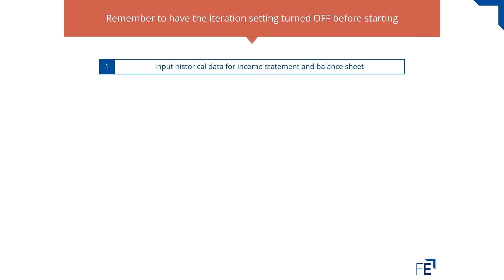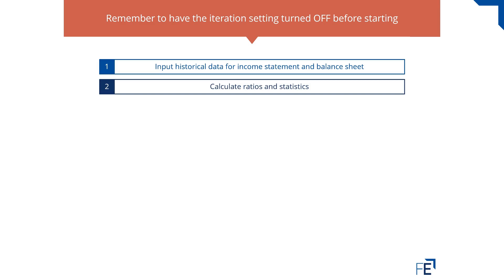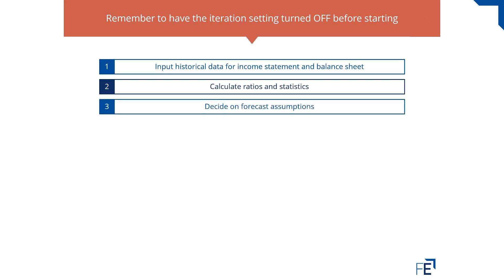Step one is to input your historical data for the income statement and balance sheets, and from that historical data calculate ratios and statistics. For instance, in the past you may have found that sales went up by five percent — that will then help you forecast your assumptions in the future, with sales potentially going up by five percent again.